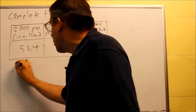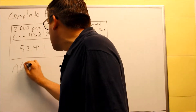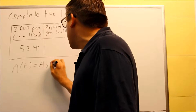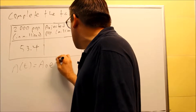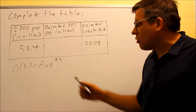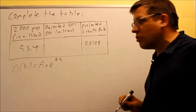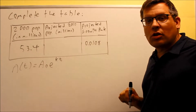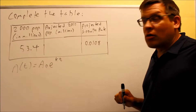We're going to use our same growth formula as we've been using for previous examples. We're going to use A(t) = A(0) · e^(kt), and we want to put in the information that's provided.